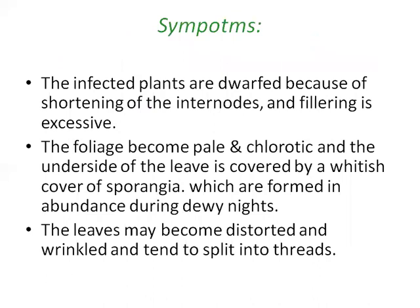The infected plants show shortening of the internodes and excessive tillering. The foliage becomes pale and chlorotic, and the underside of the leaves is covered by a whitish covering of sporangiophores, which appear in abundance during cool nights. The leaves may become distorted and wrinkled, and tend to split into strips.